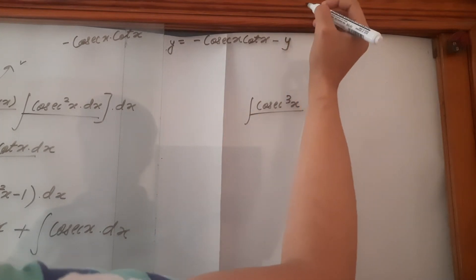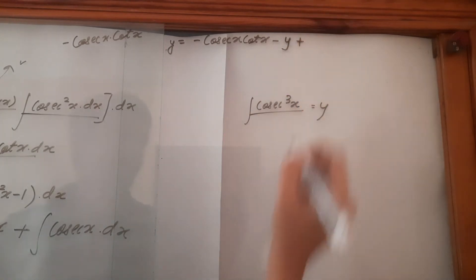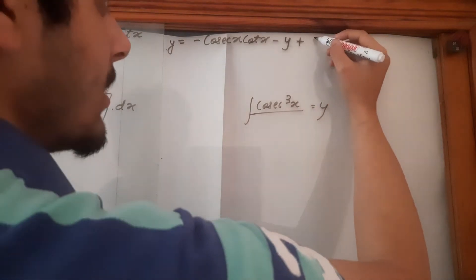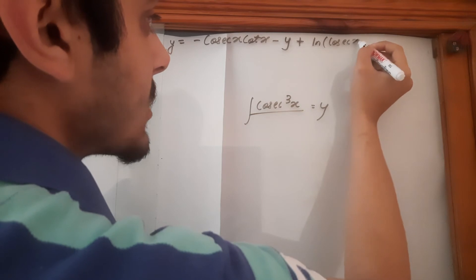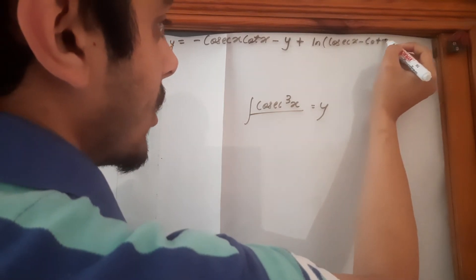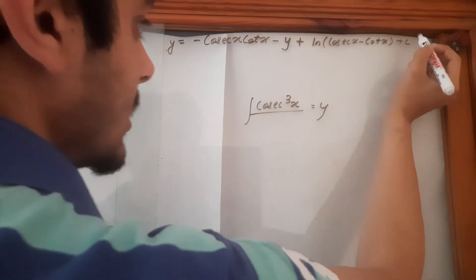So minus y, plus the integration of cosec x, as I've talked in my previous video is log cosec x minus cot x plus, of course, the integration constant.